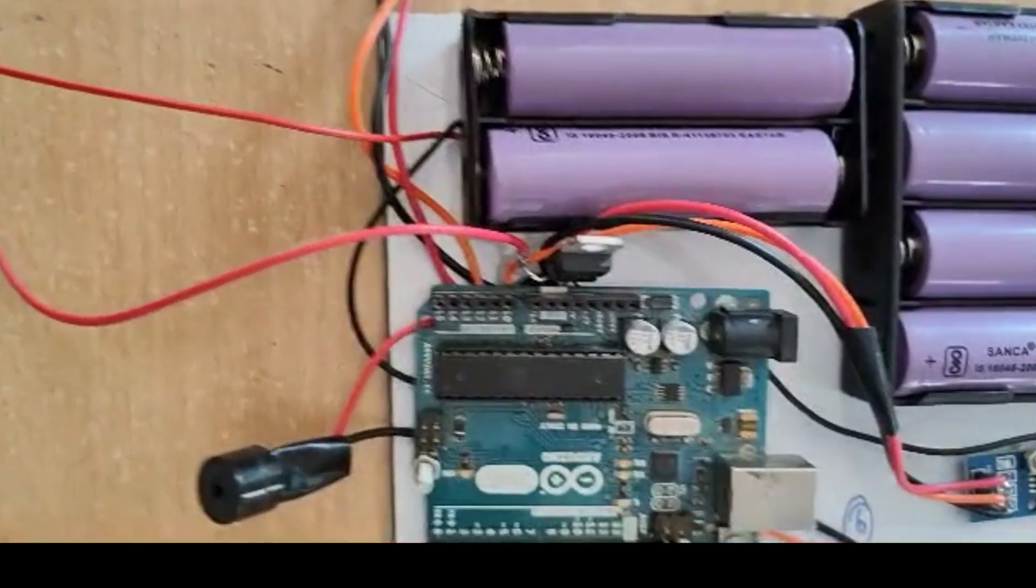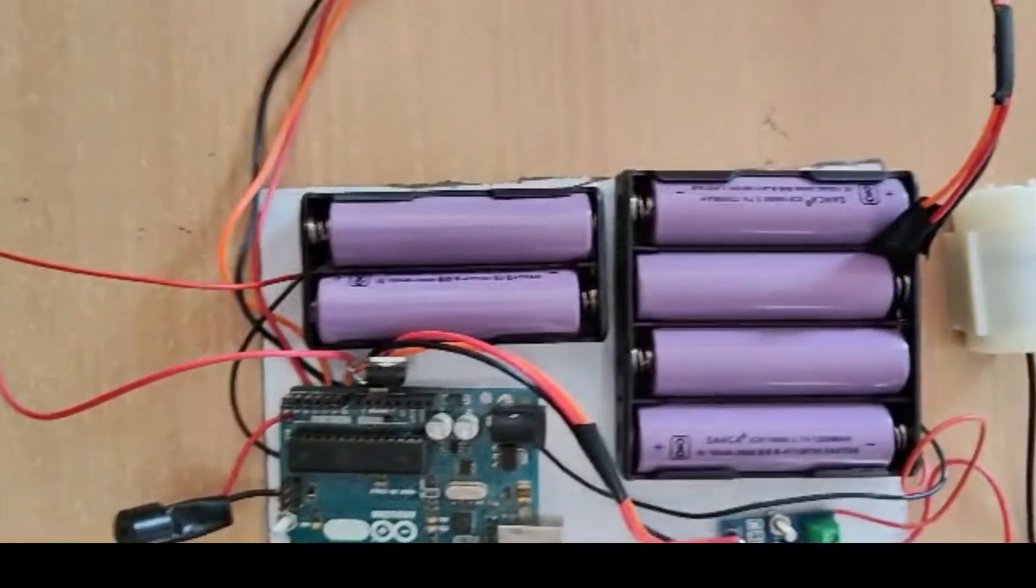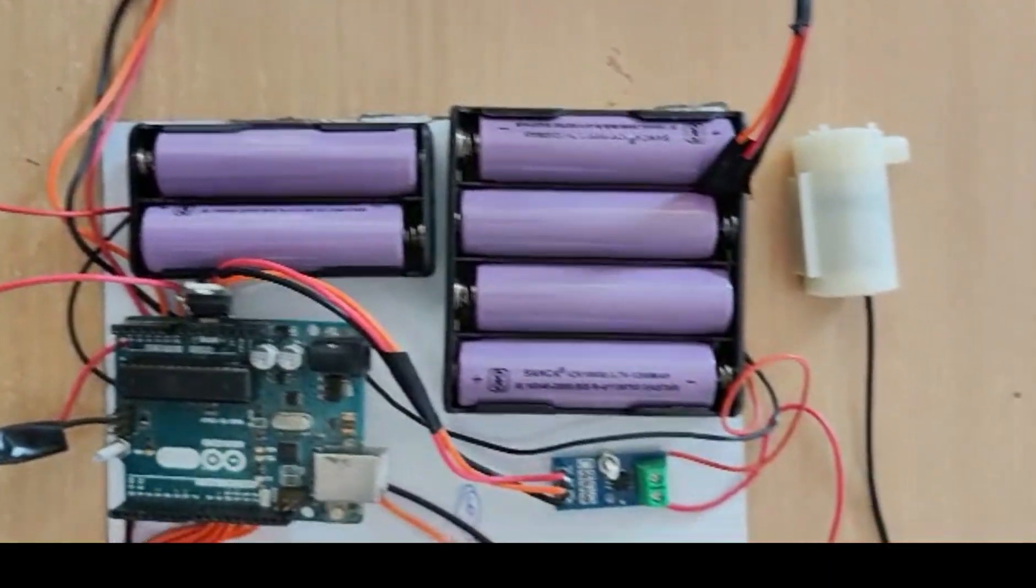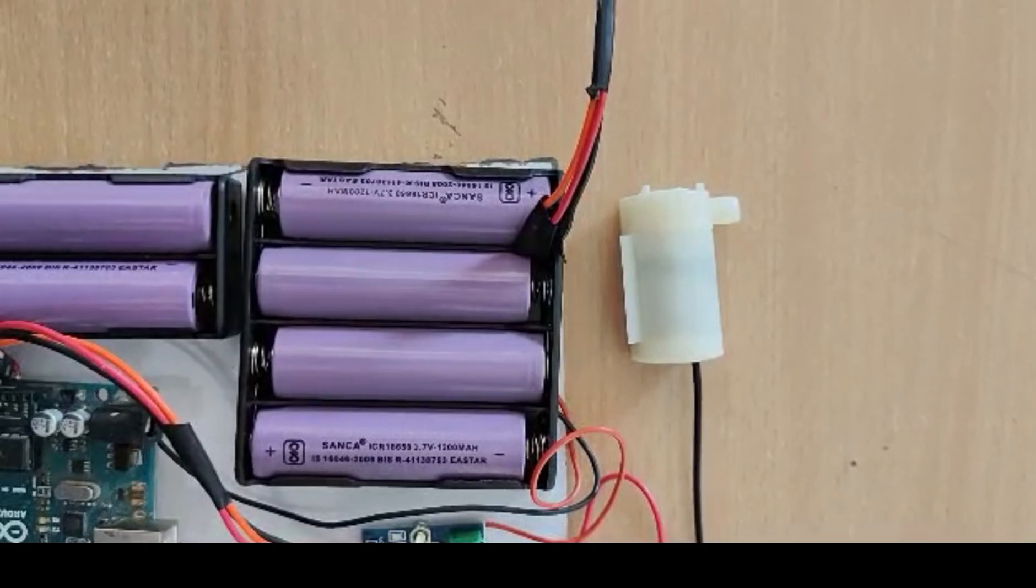The voltage regulator regulates the voltage from the battery to the Arduino. The temperature is sensed by the thermistor which is placed on the surface of the battery pack.